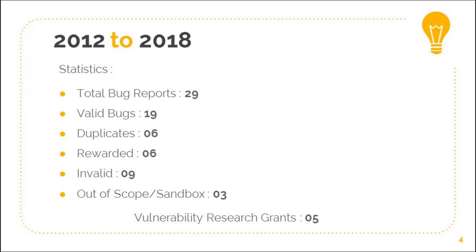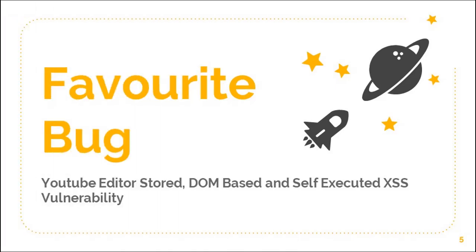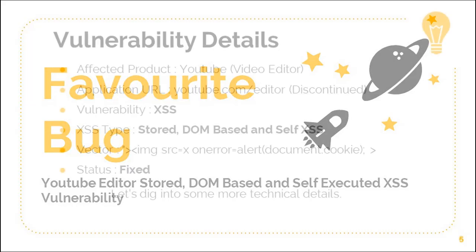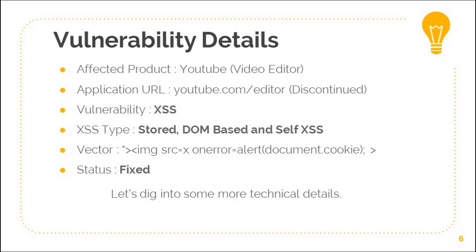Starting with my favorite bug — it's the YouTube editor: DOM-based, self-executed, stored cross-site scripting vulnerability. It is categorized into three different categories of cross-site scripting. The vulnerability details are: it's a YouTube video editor which was discontinued in September 2017. As I said, it's categorized as stored, DOM-based, and self-executed XSS. This is a simple vector that I used. The status of the vulnerability is fixed now.